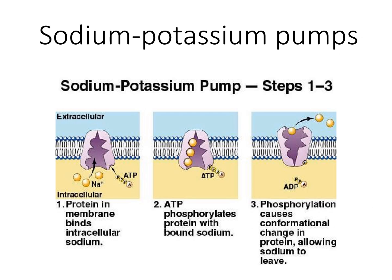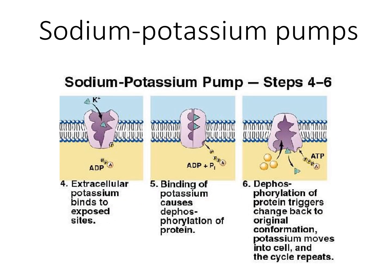Here is a diagram to explain the sodium-potassium pump. In step one, the integral membrane protein binds intracellular sodium. In step two, ATP phosphorylates the protein with bound sodium. In step three, phosphorylation causes a conformational change in the protein, allowing sodium to leave from the intracellular side — three sodium ions go out. Once ATP phosphorylates the protein, sodium is released onto the extracellular side. The extracellular potassium then comes into the new conformation and binds to the exposed sites.